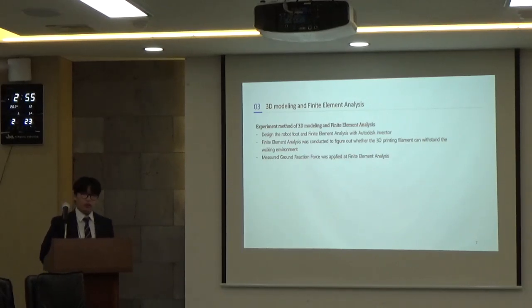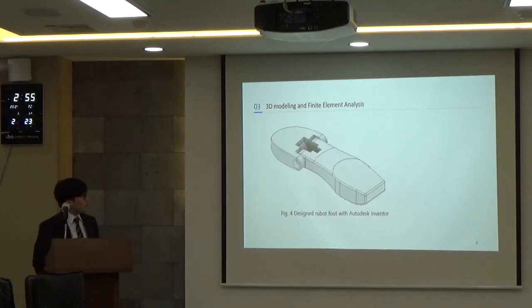For the design of robot foot, 3D modeling and finite element analysis was conducted with Autodesk Inventor. Figure 4 shows the designed robot foot with Autodesk Inventor. Previous robot foot is a monolithic foot, which is a single unit from toes to heel. This robot foot has two parts, the toes and the foot. Between the two parts, the torsion spring is located to give the push-off power.